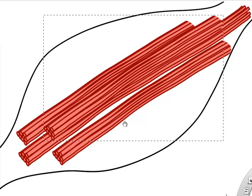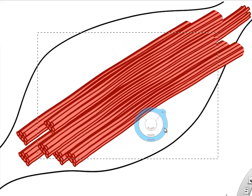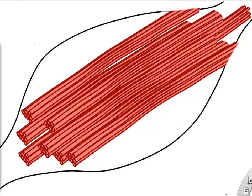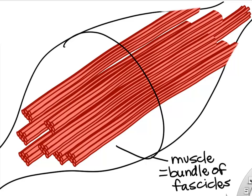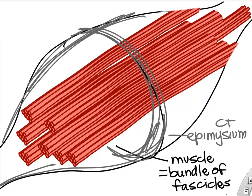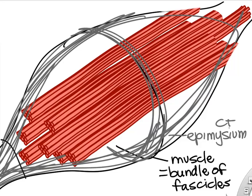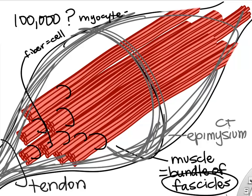In the biceps brachii, for example, there might be dozens of fascicles. Our entire muscle is simply a bundle of fascicles, and that entire muscle is surrounded by very dense connective tissue called epimysium. The epimysium also extends all the way to the tendon, and the tendon becomes a braiding of the perimysium, the epimysium, and other connective tissue. A muscle is a bunch of fascicles, fascicles are bundles of individual fibers, and a muscle may contain 100,000 or more muscle cells.